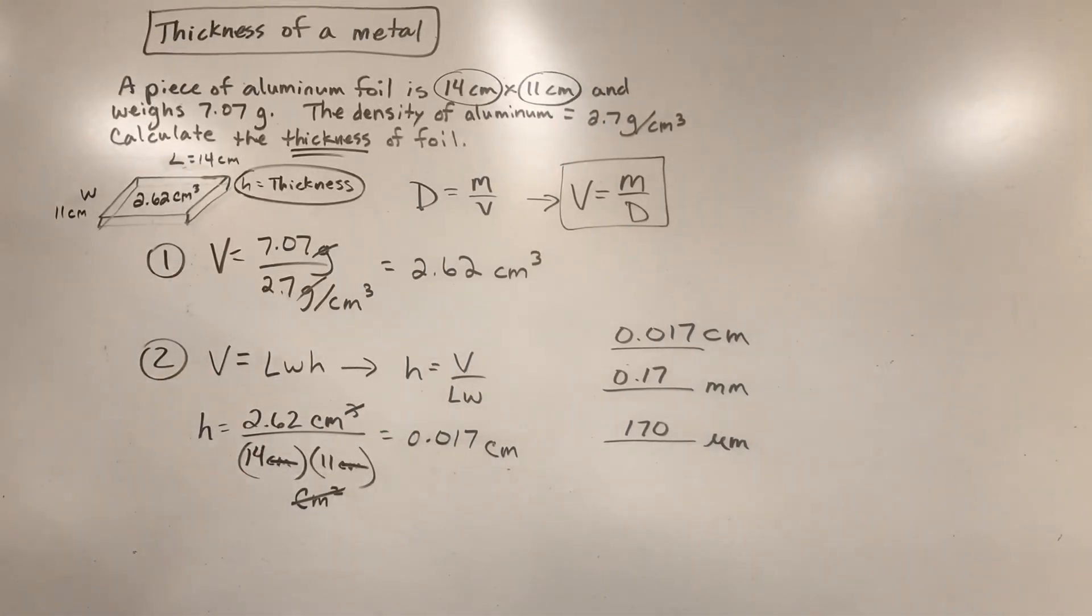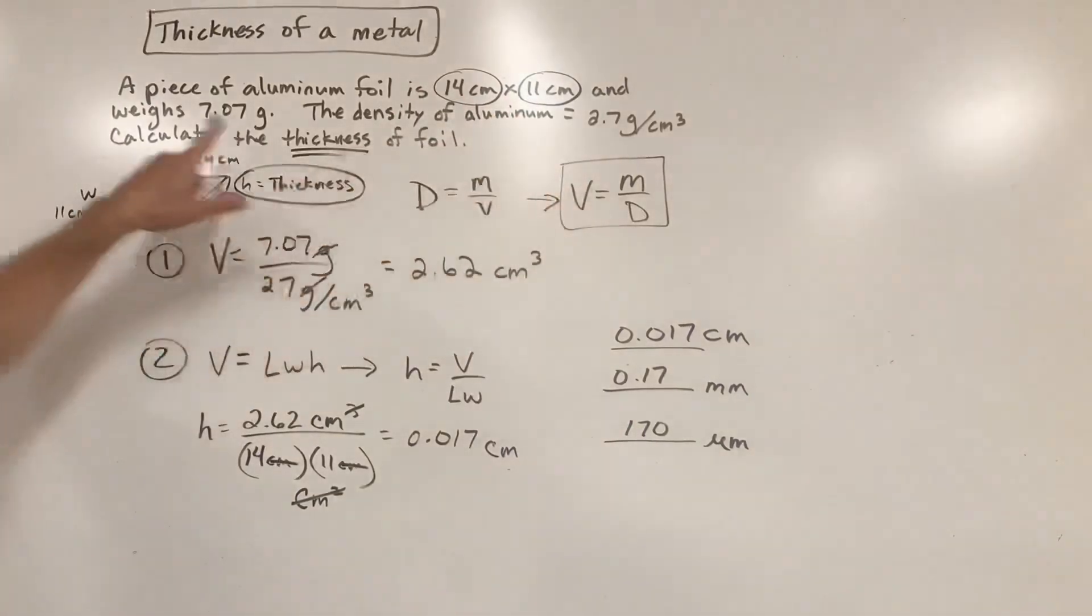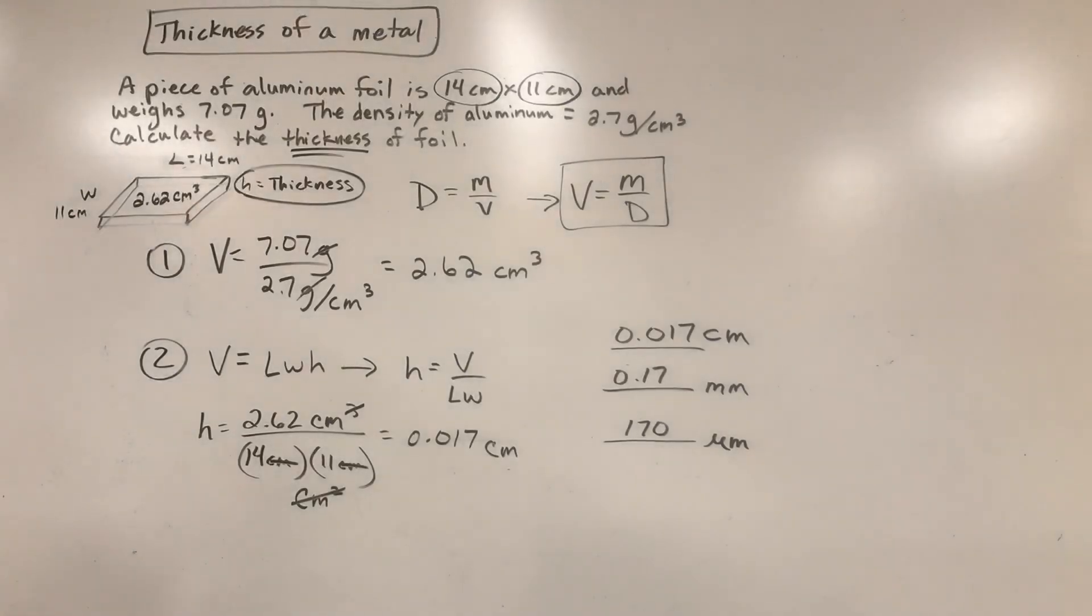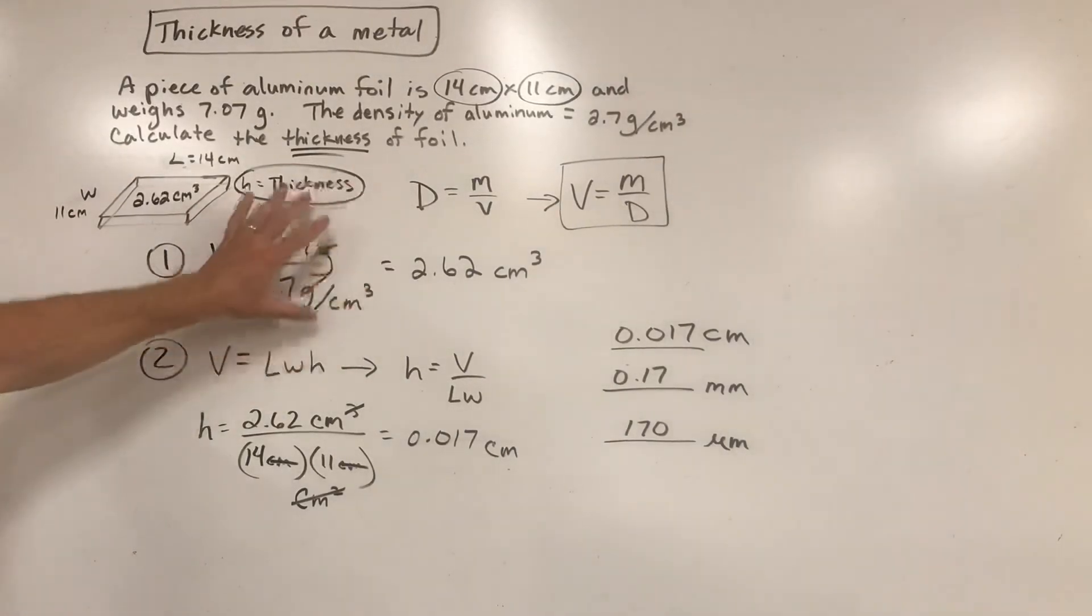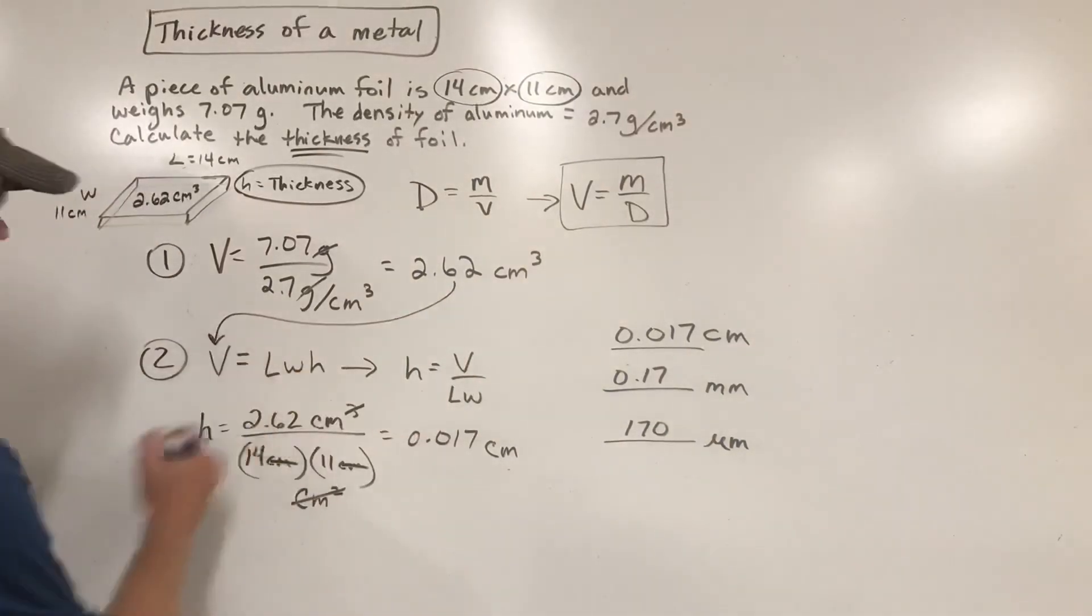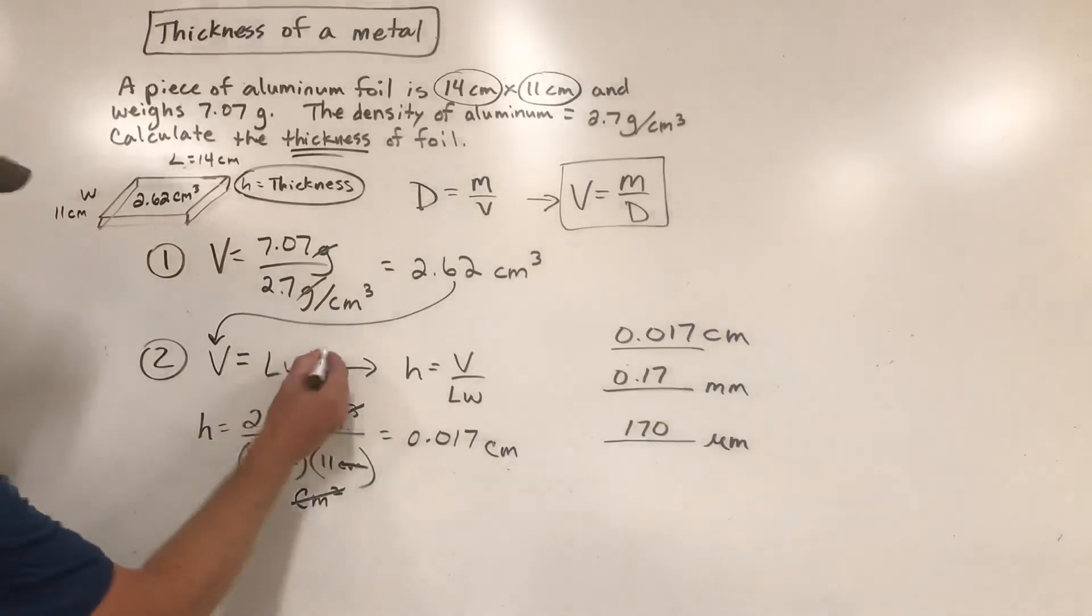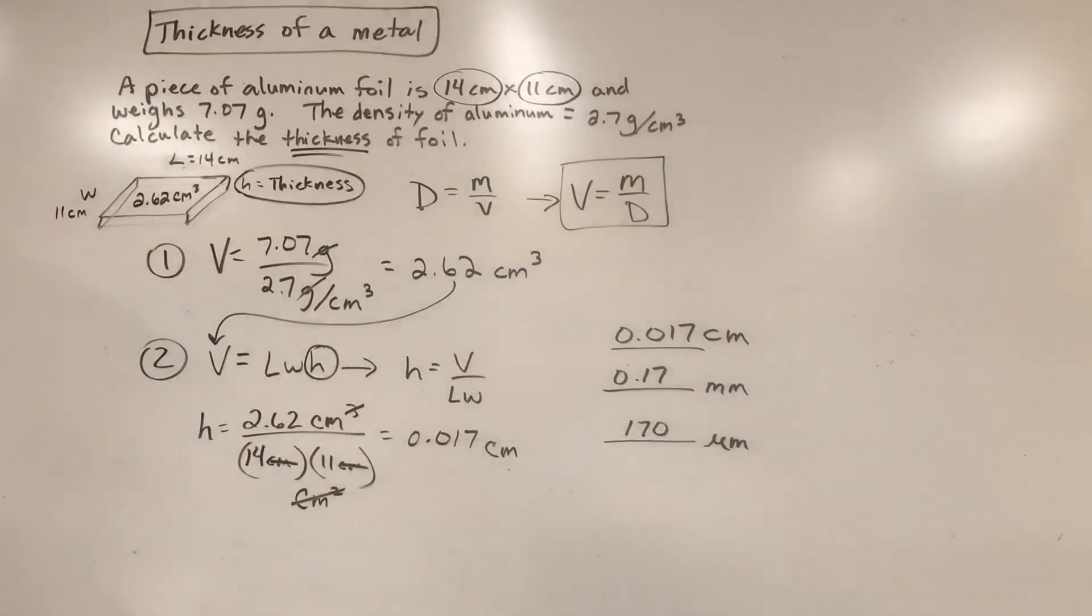That's how you go through and find the thickness of a metal. No matter what metal or situation they're giving you, typically it has this type of information. You've got dimensions, a density, a mass. It's always a two-stage problem. We got to figure out the volume using the density formula. Then we got to take that volume and plug it into a different volume formula that represents the geometry, and we use that formula to isolate the missing variable, which happens to be the thickness or the height.